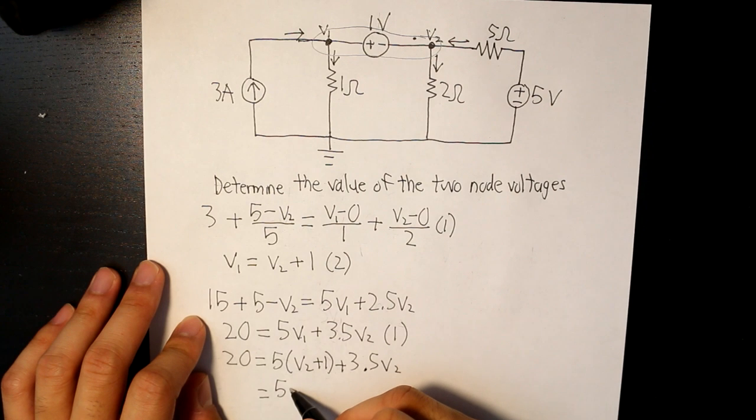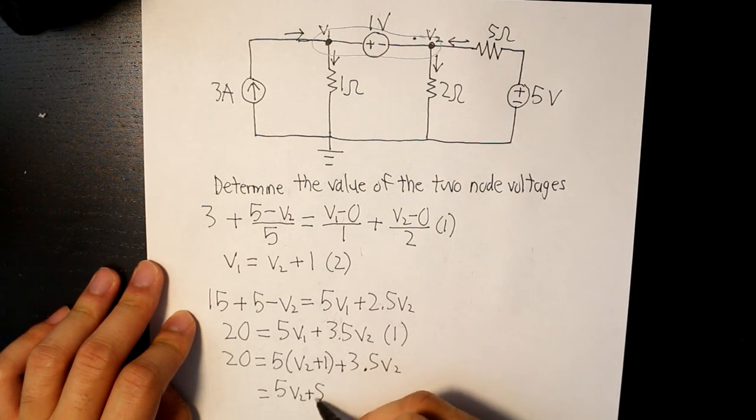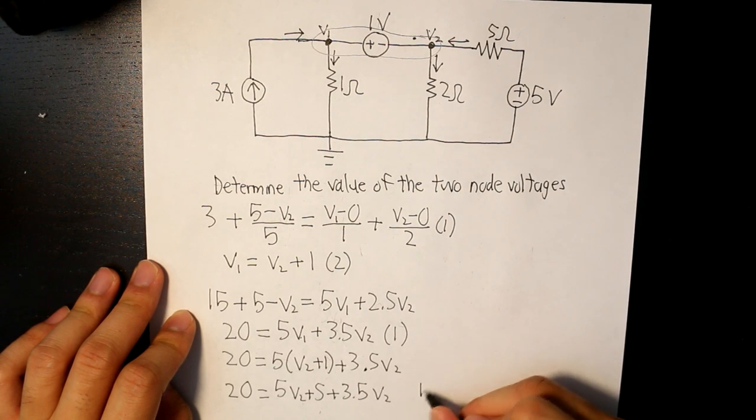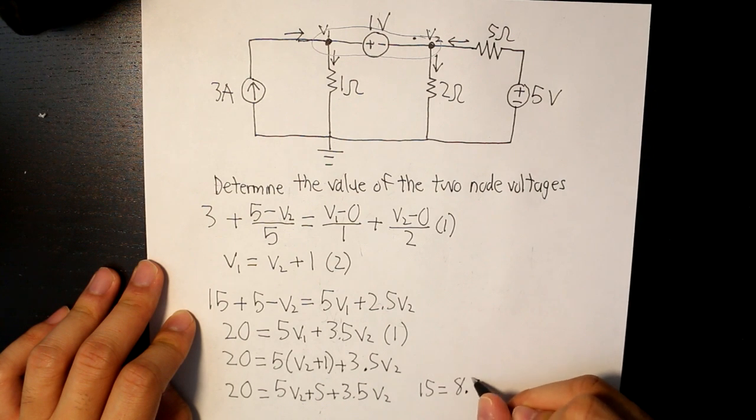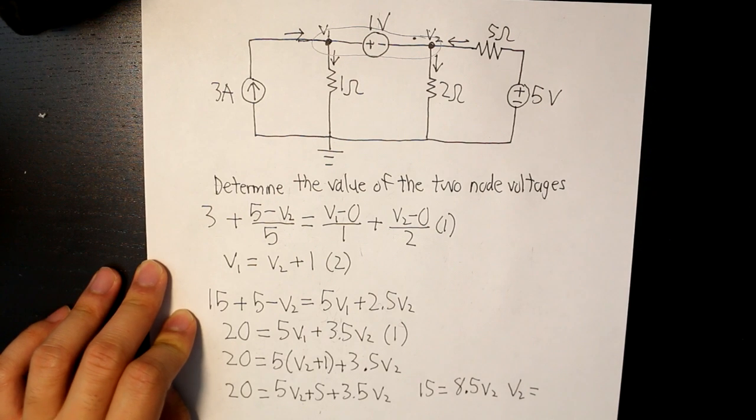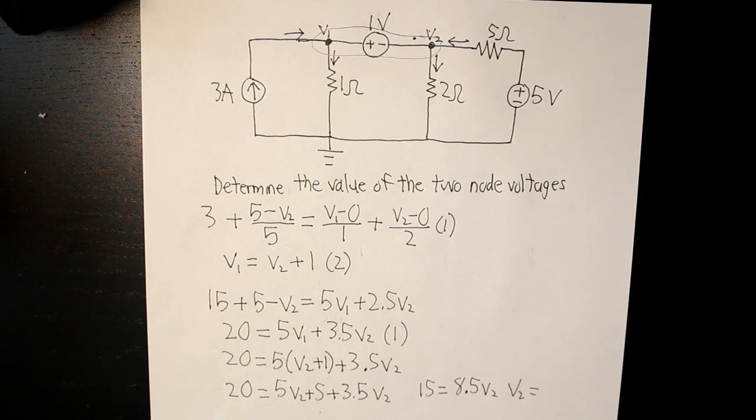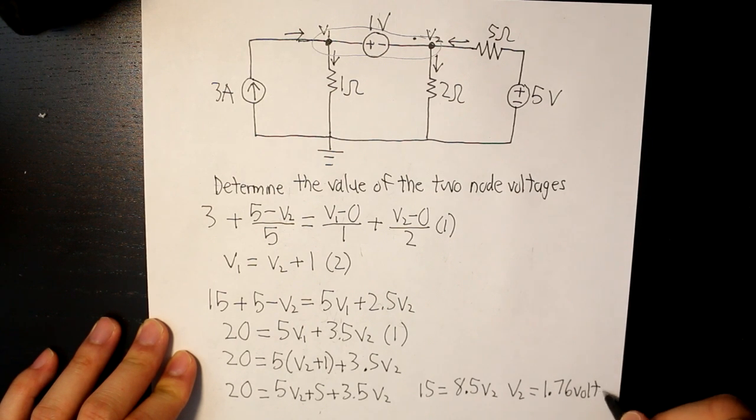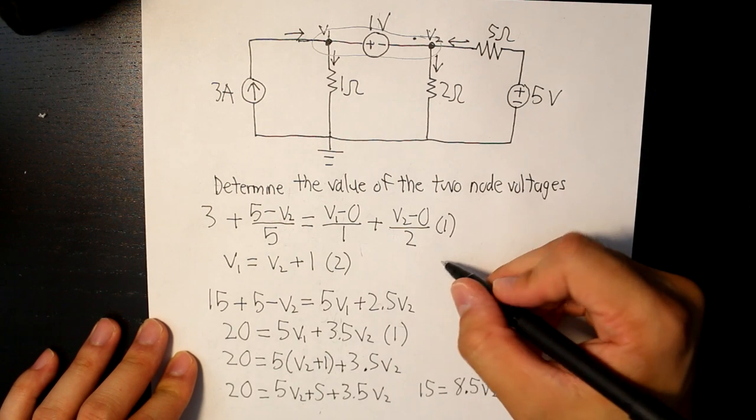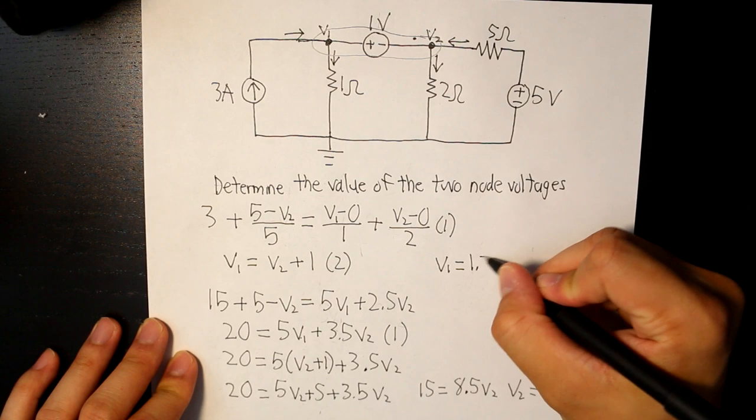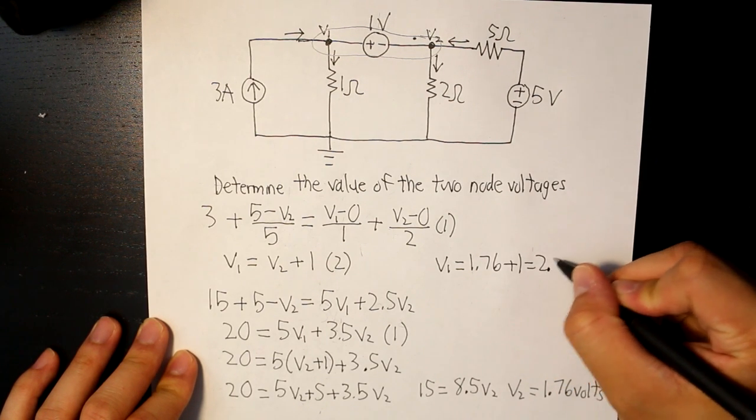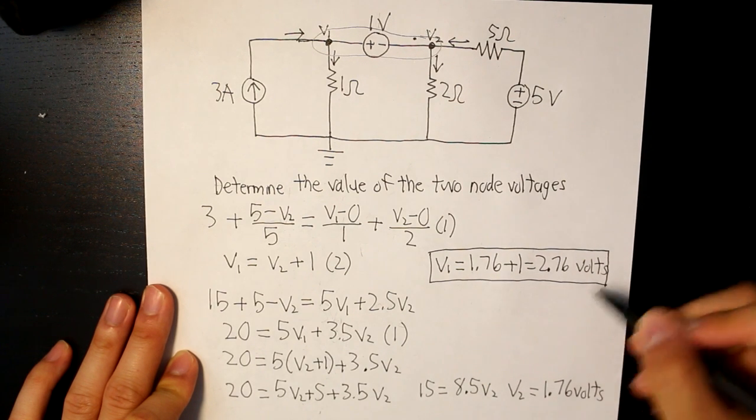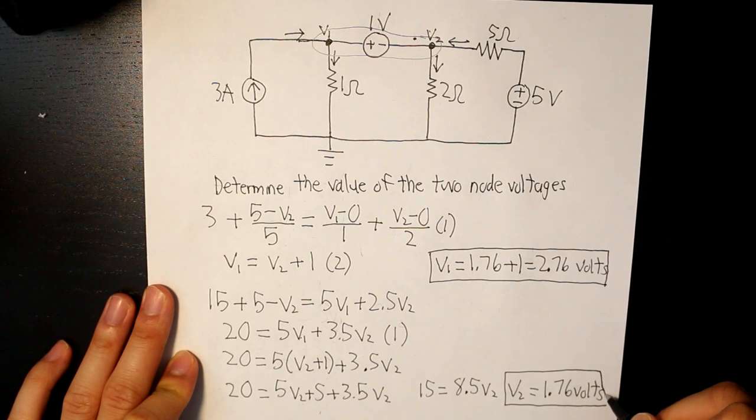And then after doing some more mathematical operations, we get 15 equals to 8.5V2. So V2 is going to be equal to 1.76V. And then we can sub in V2 into equation 2. So V1 is going to be equal to 1.76 plus 1 and that would be 2.76V. And these are our values for each node voltage.